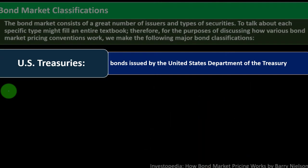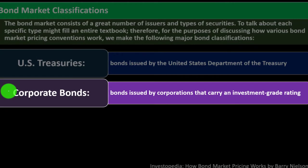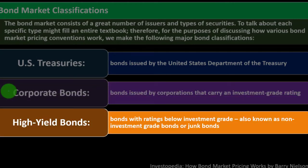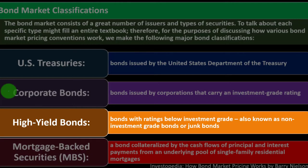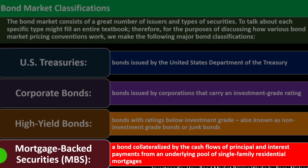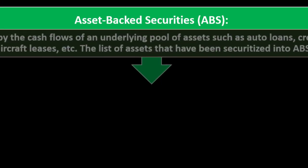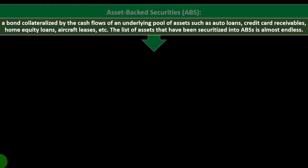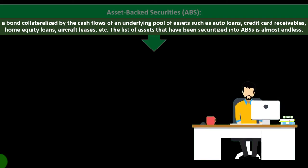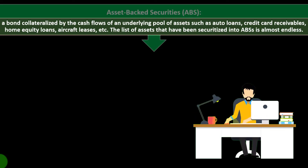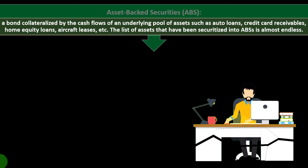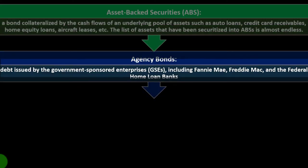Corporate bonds are bonds issued by corporations that carry an investment-grade rating. High yield bonds are bonds with ratings below investment grade, also known as non-investment grade bonds or junk bonds. Mortgage-backed securities (MBS) are bonds collateralized by the cash flow of principal and interest payments from an underlying pool of single-family residential mortgages. Asset-backed securities (ABS) are bonds collateralized by the cash flow of an underlying pool of assets such as auto loans, credit card receivables, home equity loans, or aircraft leases. The list of assets securitized into ABS is almost endless.